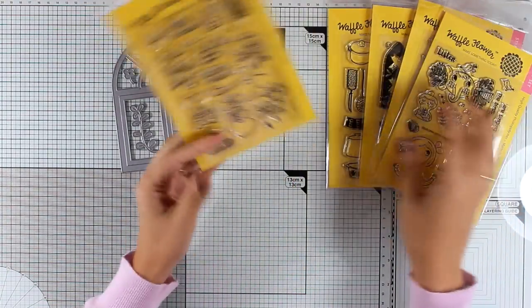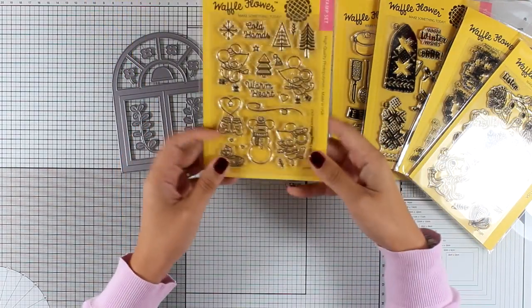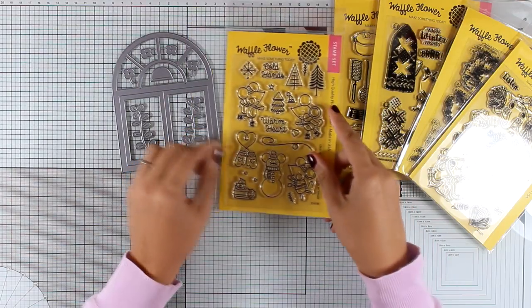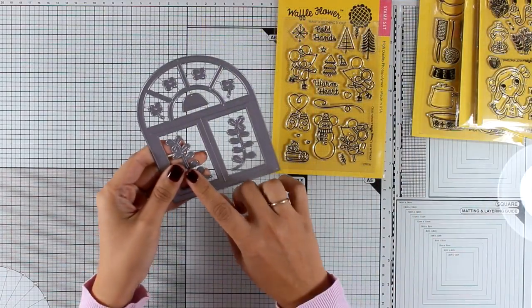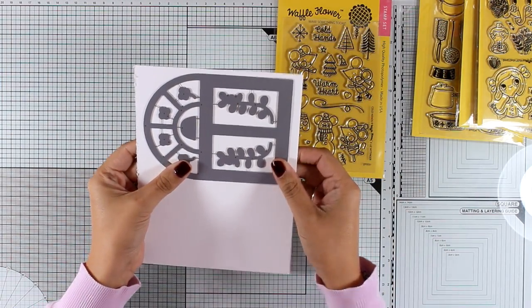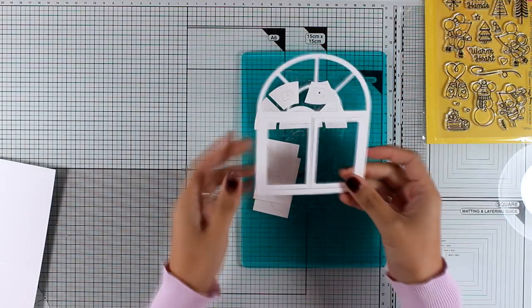It's called Cold Hands and it's super adorable, perfect for winter cards. I'm going to come back in future videos to use even more of the stamps from this release. The art window die comes with little flowers and leaves that you can use to decorate your window, but I am not going to use that. I will only use the frame, so I have cut it out.